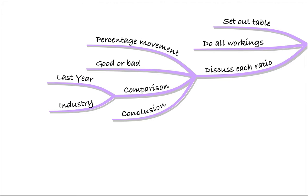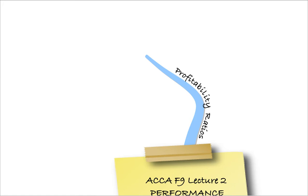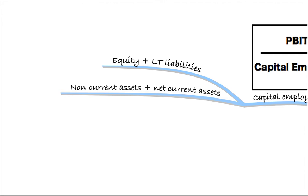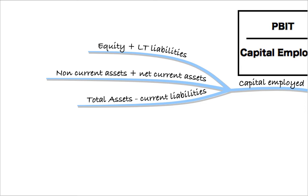What are the sort of ratios that we're going to be looking at? Profitability first of all. The first one is return on capital employed. Remember, learn this: profit before interest and tax over capital employed. There are three ways to calculate capital employed: number one, equity plus long-term liabilities; number two, non-current assets plus net current assets; and number three, total assets less current liabilities. Remember, all three of these give you exactly the same figure.